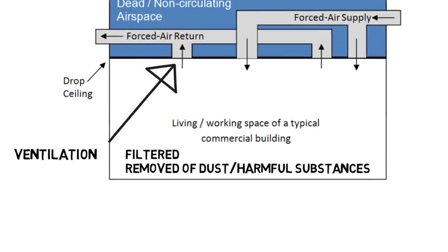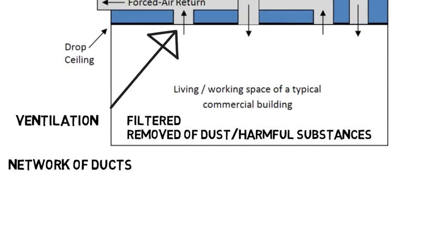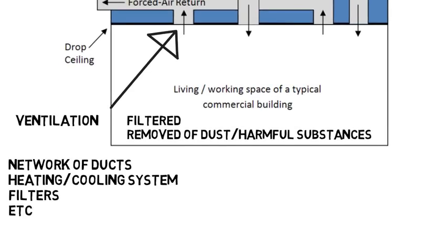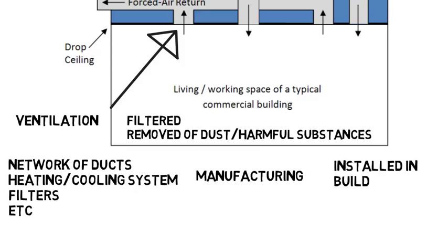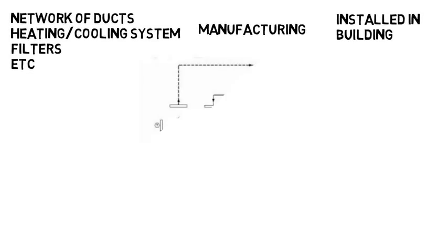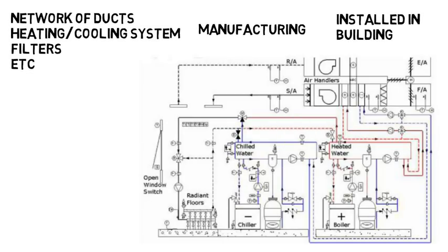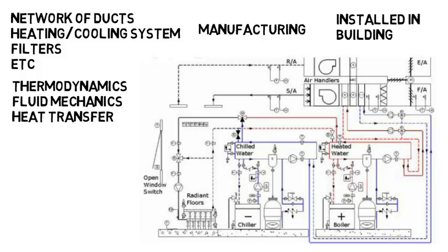The HVAC engineer could design the network of ducts, the heating and cooling system, the filters and more on the computer — something you'll see a lot, like with AutoCAD. Then those are sent off to be manufactured, which the mechanical engineer could work on as well, and then they need to be installed in the building itself. HVAC incorporates thermodynamics, fluid mechanics, and heat transfer, which are the prerequisite courses for the HVAC electives you'll take.